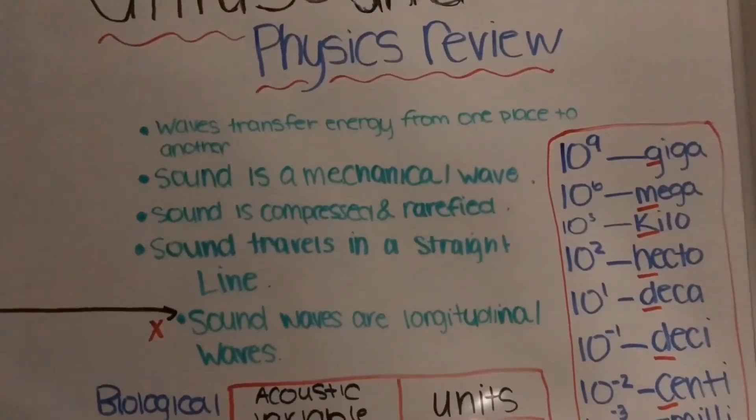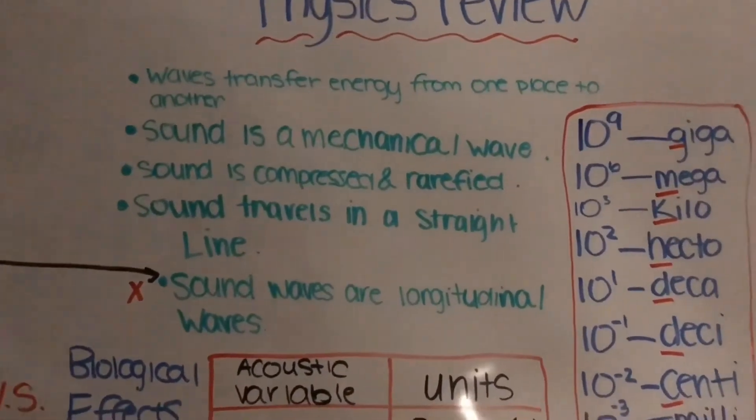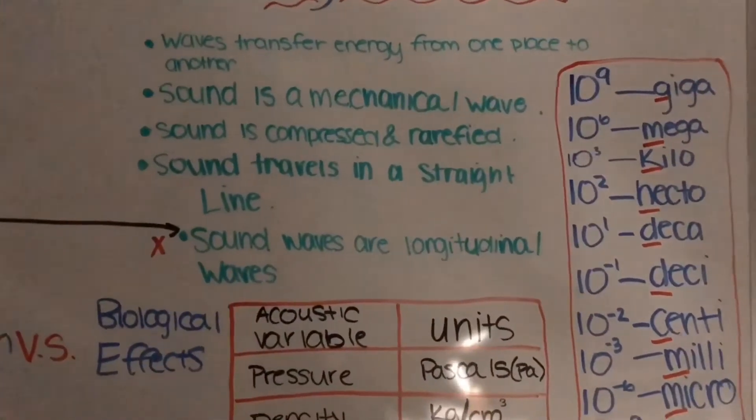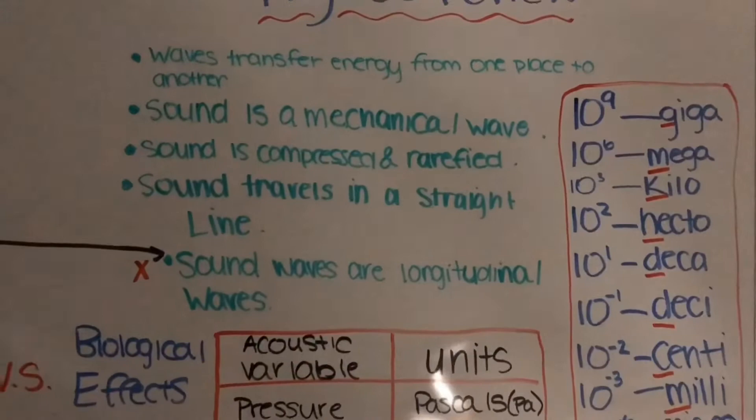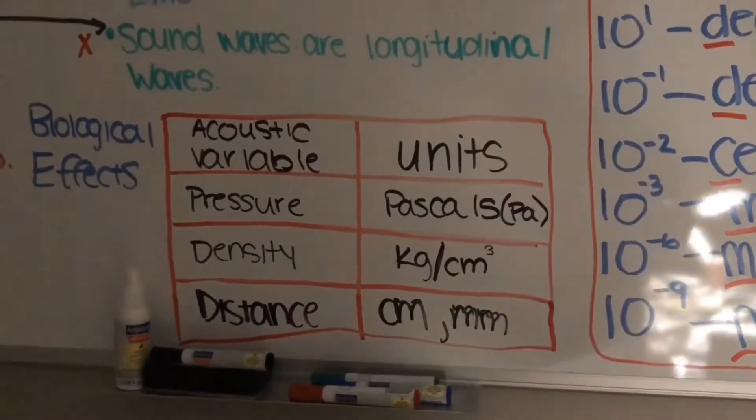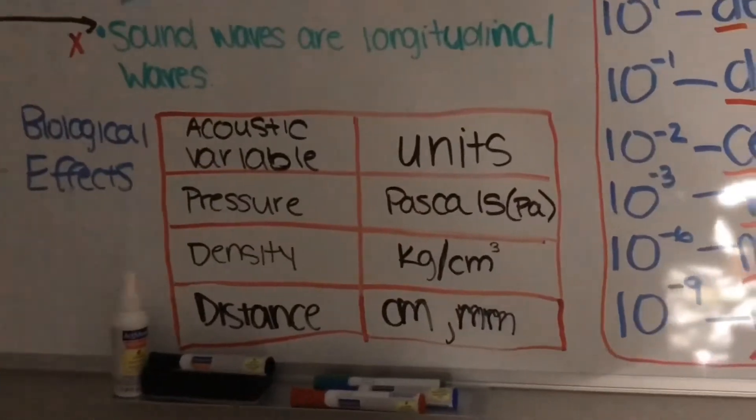Waves transfer energy from one place to another. Sound is a mechanical wave. Sound is a series of compressions and rarefactions. Sound travels in a straight line, and sound waves are longitudinal waves. Pressure, density, and distance are acoustic variables, and they show up a lot, so you want to remember their units.